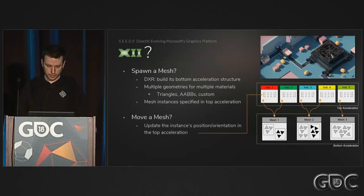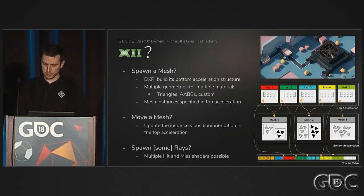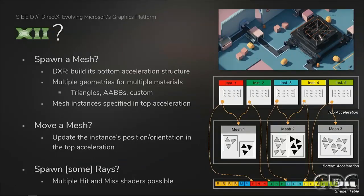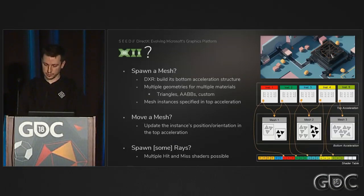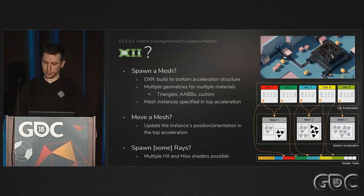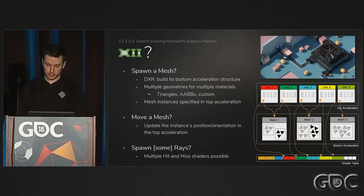Once all of this is done, we can spawn some rays using ray generation shaders, and we have many of them to support all of our techniques. We have per-instance hit shaders for all the ray types like primary visibility or shadows. We have global miss shaders. All of these shaders need to be accessible at all times for all the rays being launched in the scene, which is why they live in the shader table.